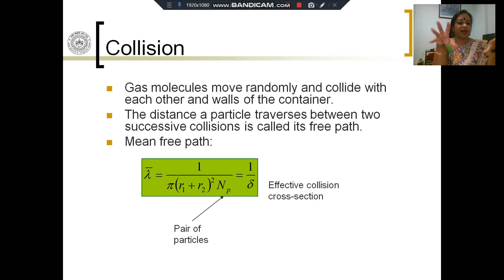The distance a particle travels between two successive collisions is called its free path. For any given gas system or gas volume, we can talk about a mean free path. We are not interested in individual velocities or individual free paths, but in the behavior of the gas as a whole.